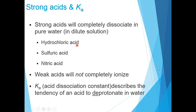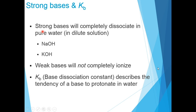Strong acids such as hydrochloric acid, sulfuric acid, and nitric acid completely dissociate in pure water, whereas weak acids do not completely ionize. Ka, or the acid dissociation constant, describes the tendency of an acid to deprotonate in water. Strong bases such as sodium hydroxide or potassium hydroxide completely dissociate, while weak bases do not. Kb, or base dissociation constant, describes the tendency of a base to protonate in water.